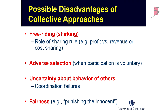Of course, there are disadvantages as well. The potential for free riding depends upon how the incentive structure is set up — whether you're sharing profits, revenue, or costs. It's certainly possible to design these mechanisms to eliminate free riding; that's an important point from the theoretical literature on collective approaches. Adverse selection is another issue: if you have voluntary participation, people may opt in or out in counterproductive ways. Some coordination failures can occur because you're not sure how other people in the group might behave. And there's the fairness issue — the concern of punishing the innocent if I'm not the one responsible for the bad behavior, yet I'm part of the group that is punished.